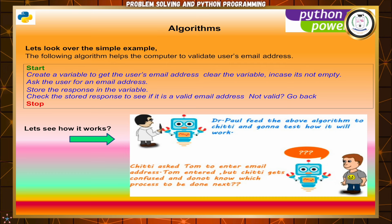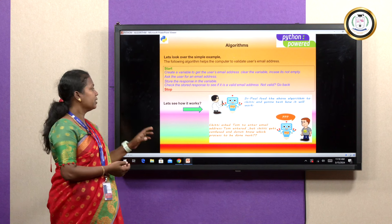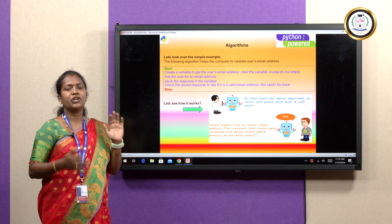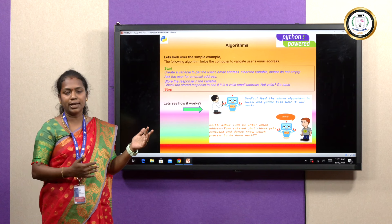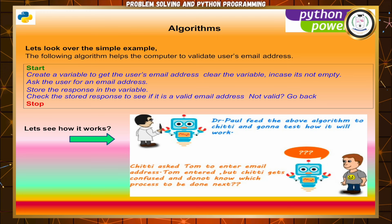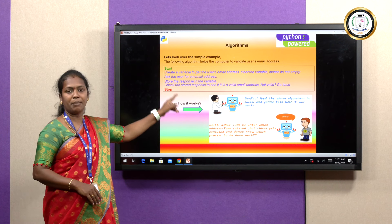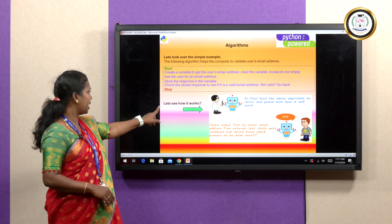Let us look at a simple example: an algorithm written to help the computer validate a user's email address. The first step is start. The information should be well-defined and unambiguous. And effectively computable — these three must be satisfied for the computer to properly understand the algorithm. The final step is stop. The middle part: create a variable to get the user email address, clear the variable in case it is not empty, ask the user for an email address, store the response in the variable, check the stored response if valid or not valid, and go back.